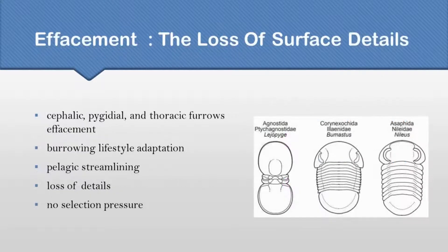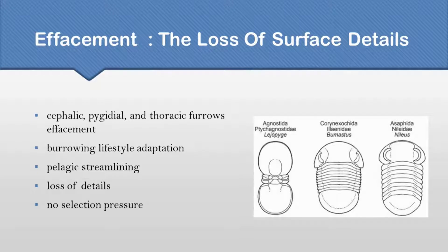In some trilobites, surface details got smoother — the cephalon, pygidial, and thoracic furrows got smoothed out. This caused some problems in the identification of certain species.